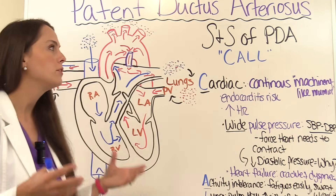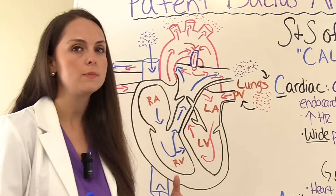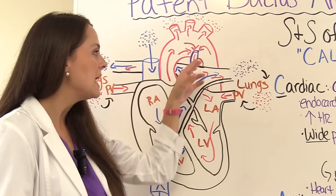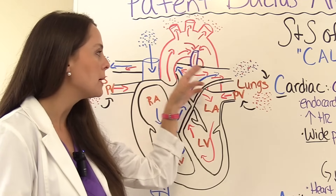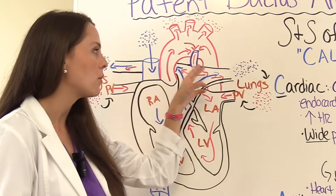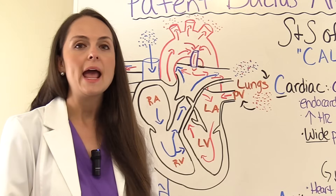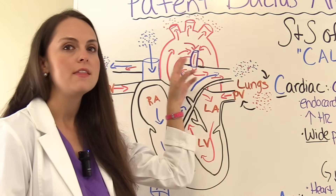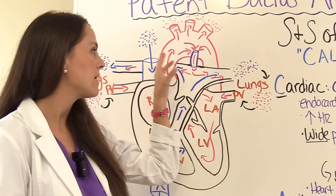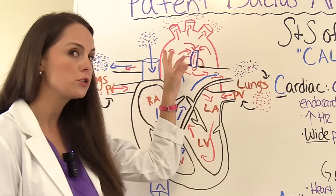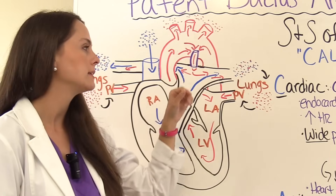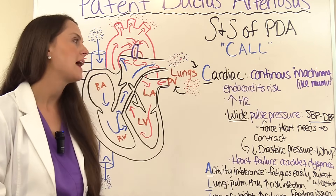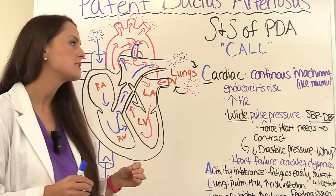With a large PDA, a lot of blood is escaping and causing turbulent blood flow and pressure. When you listen at the left upper sternal border, you can hear that turbulence — it sounds machinery-like. In addition, patients can have endocarditis, as we discussed, so they're at risk for that.